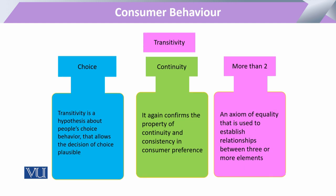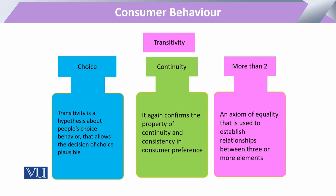The third concept is transitivity — derived from transition, meaning a flow or sequence. In previous axioms we always decided between two bundles, but transitivity involves more than two bundles. In transitivity we look at at least three consumption bundles: if bundle A is preferred to bundle B, and bundle B is preferred to bundle C, then bundle A will by transitivity be the expressed preference over bundle C. So the consumer's decision follows a sequence of preference across three bundles.